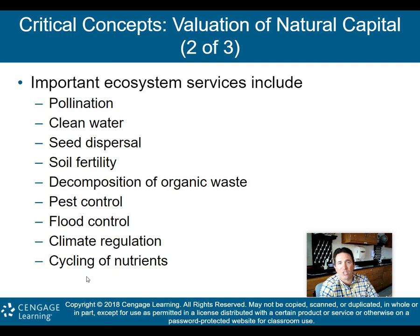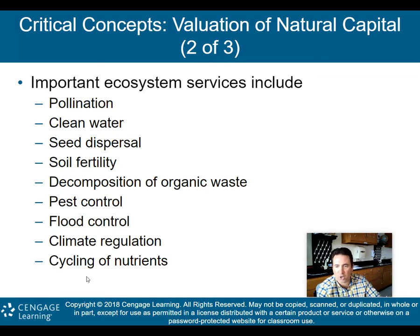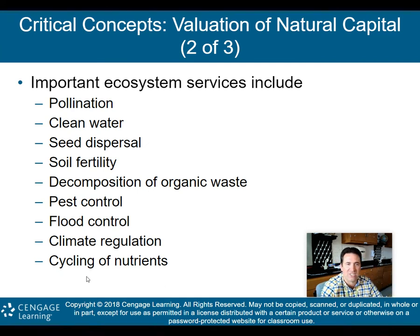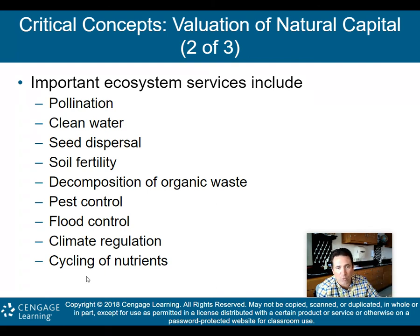Important ecological services include: pollination, clean water, seed dispersal, soil fertility, decomposition of organic waste, pest control, flood control, climate regulation, and cycling of nutrients. These are all important ecological services that biomes — whether mountain, desert, or forest — do for us. We need to put a value on these so we understand what it truly costs when we degrade them.